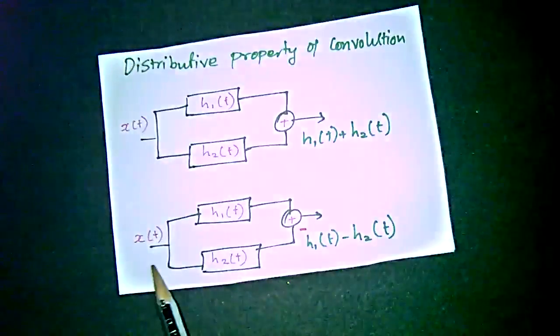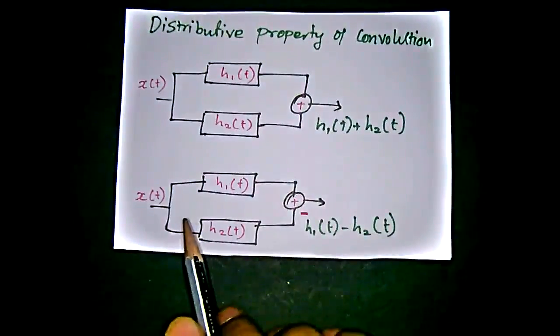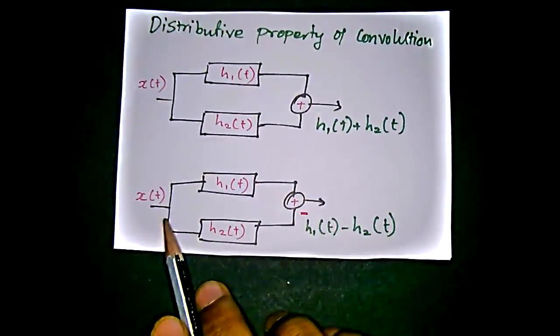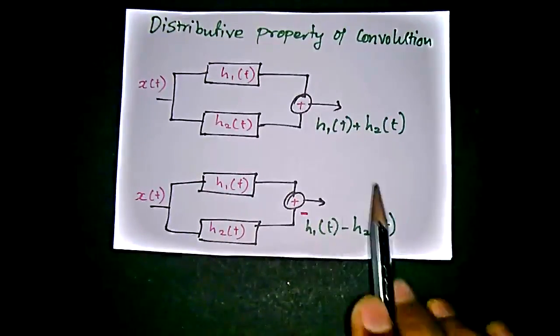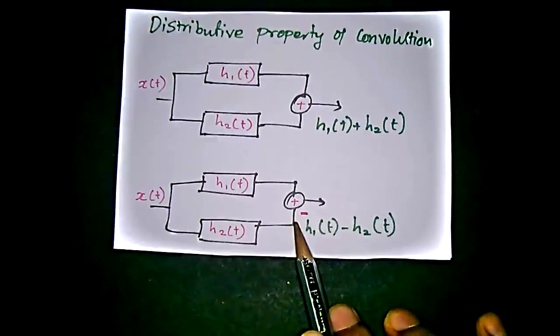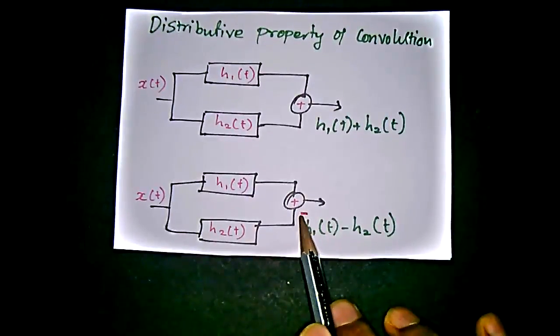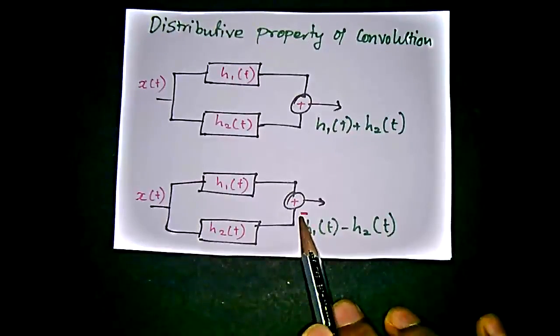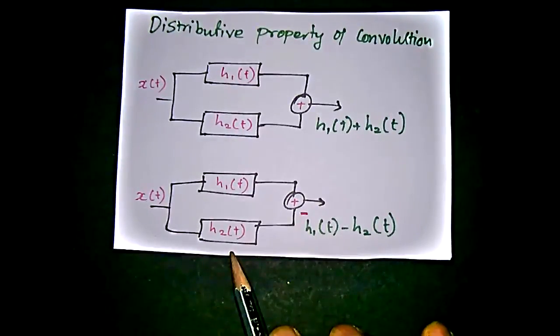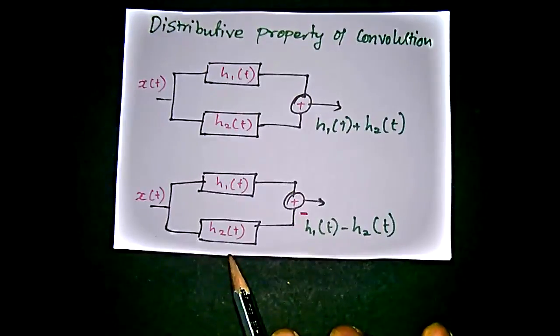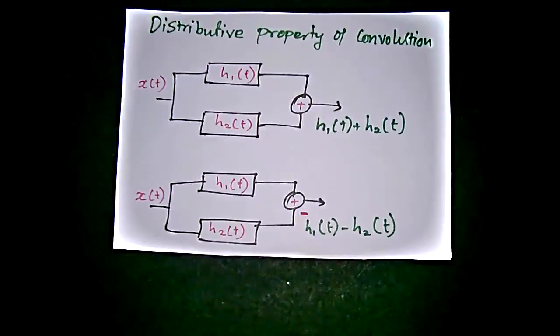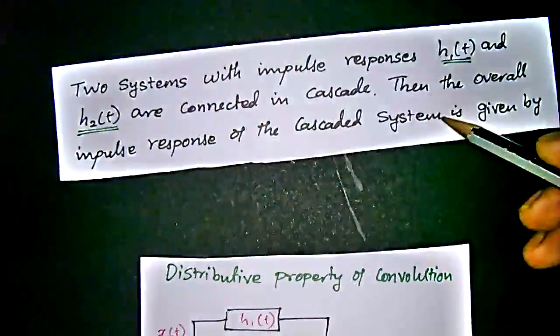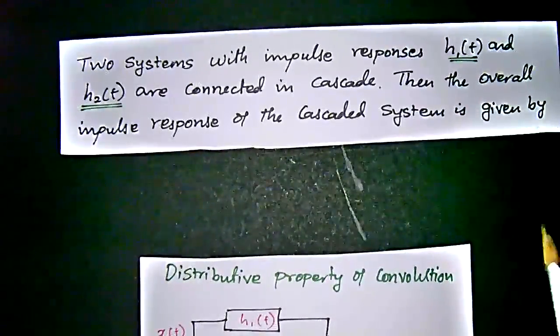In the second diagram, we have x(t) distributed through h₁(t) and h₂(t), but this summer value has minus. This minus value represents that h₂(t) should have negative magnitude, so h₁(t) minus h₂(t). This is how distributive property works.